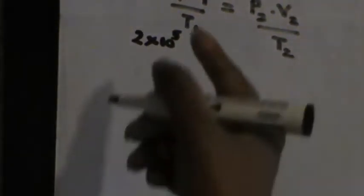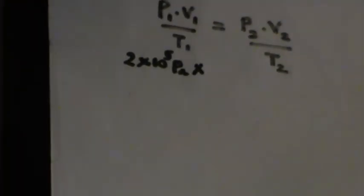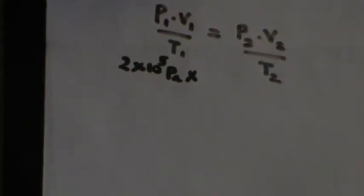So I can substitute the values. P1 is 2 times 10 to the power 5. Remember to include the units so you don't get inaccurate answers — it's always good practice to write units in these equations. V1 is 2 cubic decimeters. Since V1 and V2 are both in cubic decimeters, I don't need to convert them as they will cancel off.